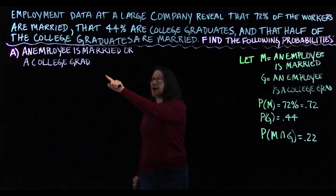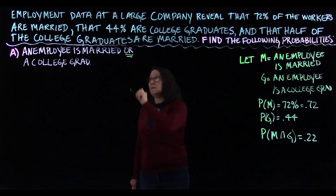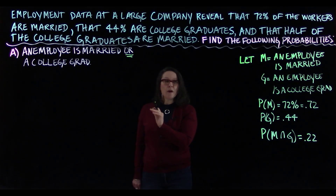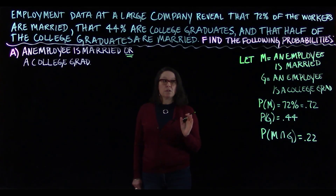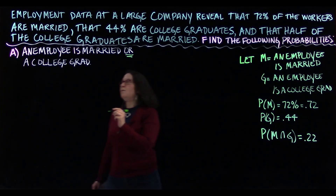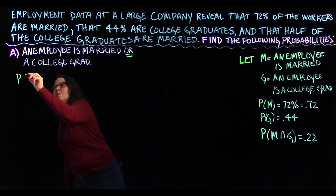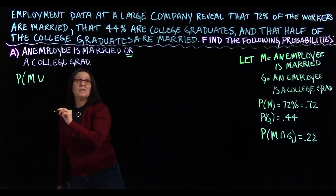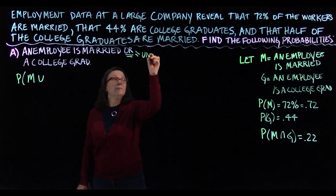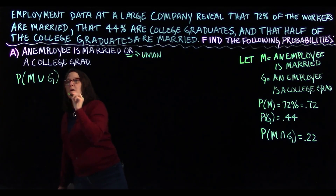The first probability we're finding is the probability that an employee is married or a college graduate. Remember that 'or' means you could be this or that or both. So we're going to use the general probability addition formula. The 'or' corresponds to the union symbol — married or a college graduate, P(M ∪ G).